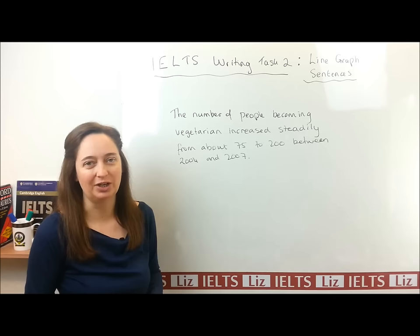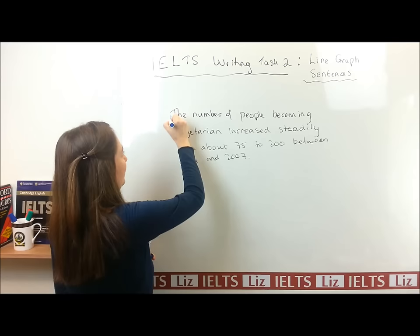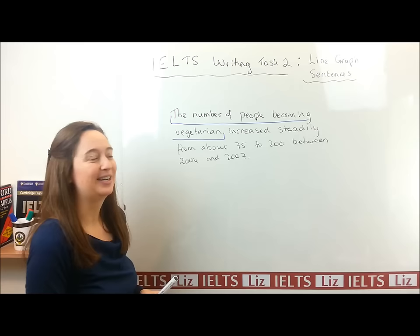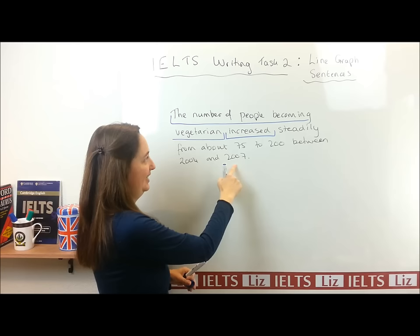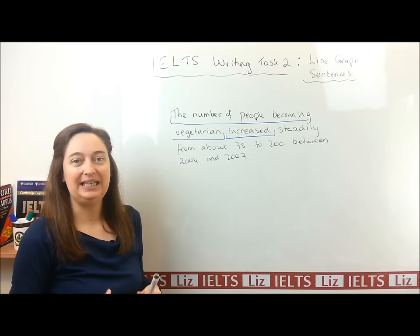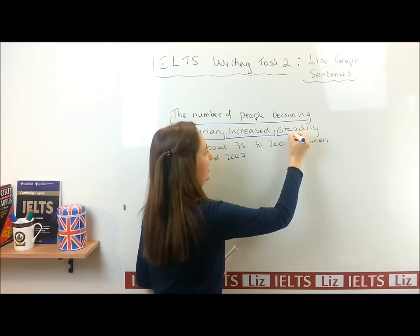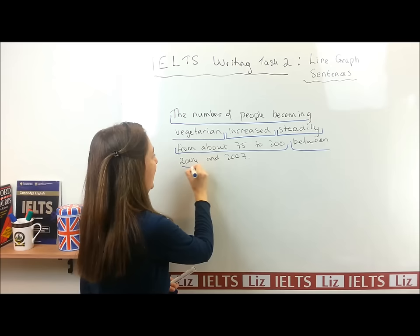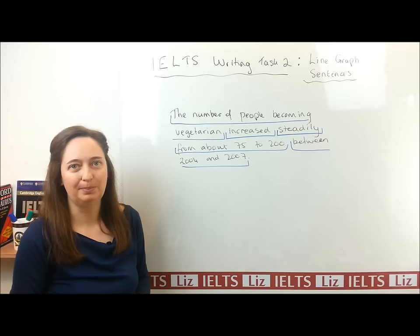Let's have a look at the sentence first. The number of people becoming vegetarian — that is our subject, it's quite long. After the subject we've got the verb. And if you look at the dates, you can see that it is the past tense. After the verb we need to describe the movement — it increased steadily. So that's our adverb. After that we had the numbers, and after the numbers we had the dates.